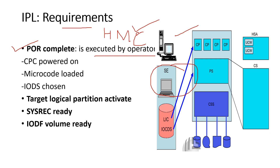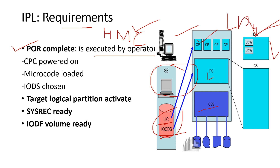Next is LIC and IOCDS. At POR, the hardware input/output configuration definition is loaded from the IOCDS into the HSA. POR also loads the microcode. LIC is the Licensed Internal Code loaded into all processors. This initializes the CP, PS, and CSS — Channel SubSystem. HSA is a non-software-addressable piece of central storage used as a microcode work area. After completion of the POR process, all LPs are defined and the entire I/O configuration is defined.